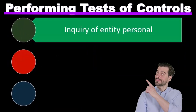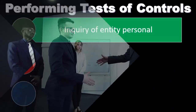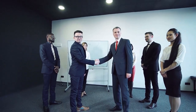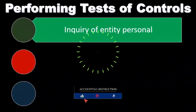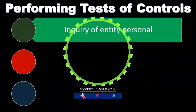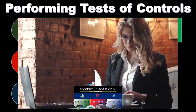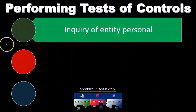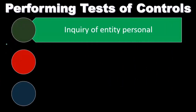Recalling what tests of controls are, they're going to be the responsibility of management. Management sets up the tests of controls, the control system, often including some format of checks and balances and separation of duties. We can imagine then how we as the auditor go in and test the internal controls. A large part of it is going to be us going in and having inquiry, asking questions about the internal controls.